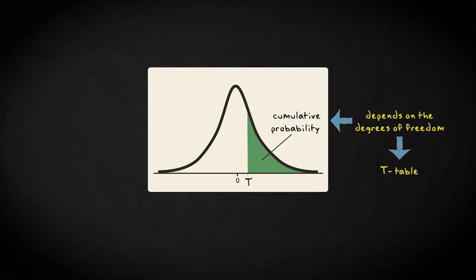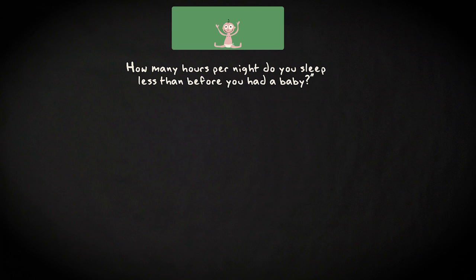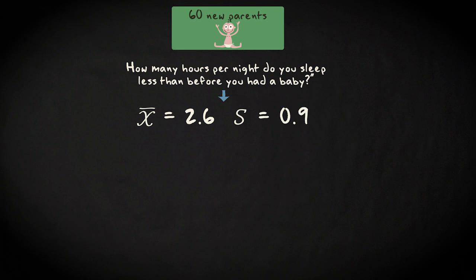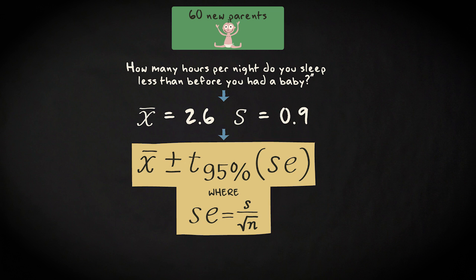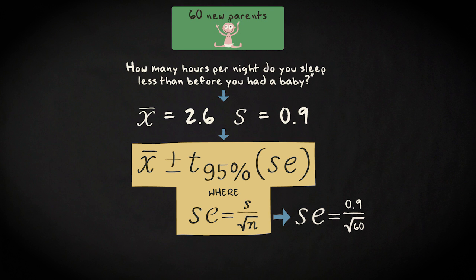Let me show you how that works by means of our new parent study. The mean lost sleeping hours in our sample was 2.6, and the standard deviation was 0.9. The sample size was 60. This is the formula to compute the endpoints of the 95% confidence interval. Let's start with computing the standard error. It equals the sample standard deviation s divided by the square root of n — that is 0.9 divided by the square root of 60 — which makes 0.116.